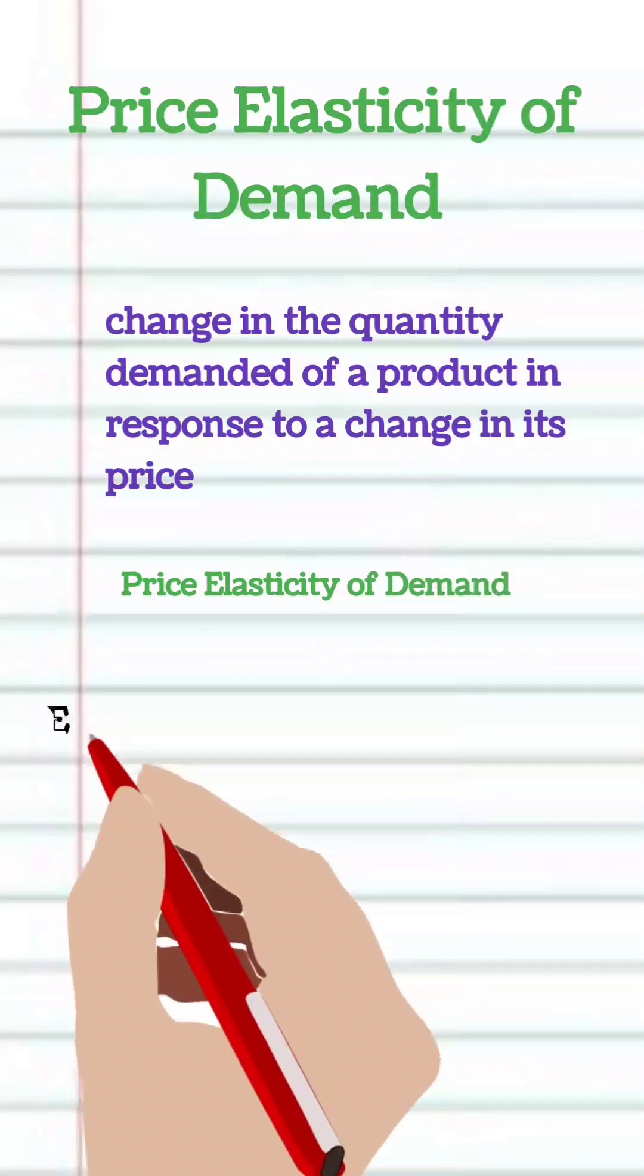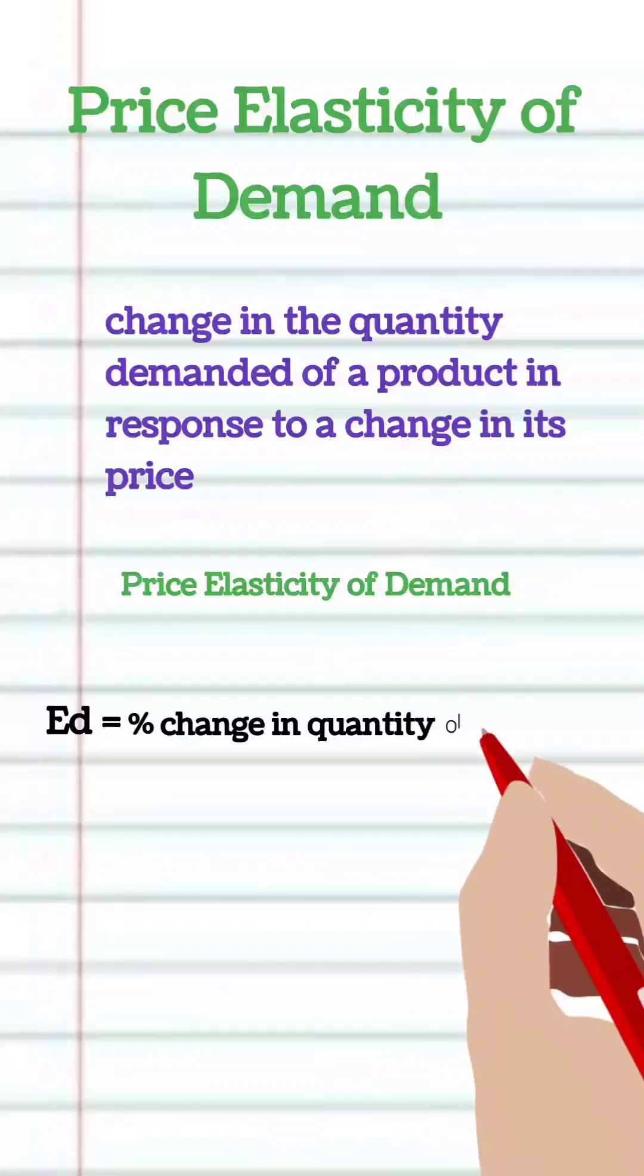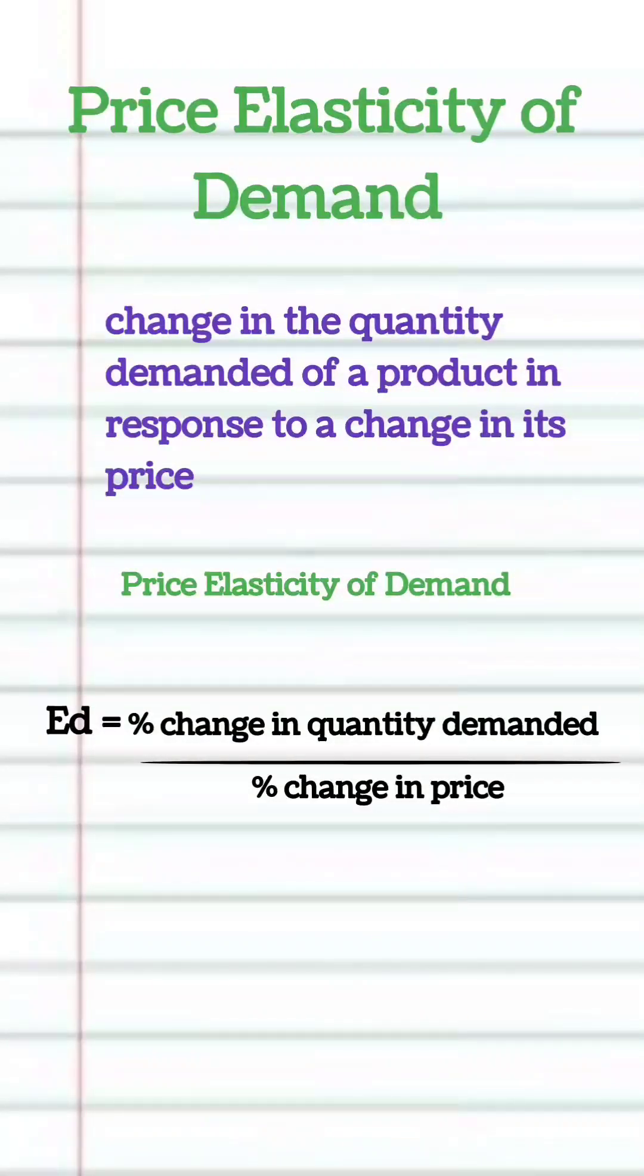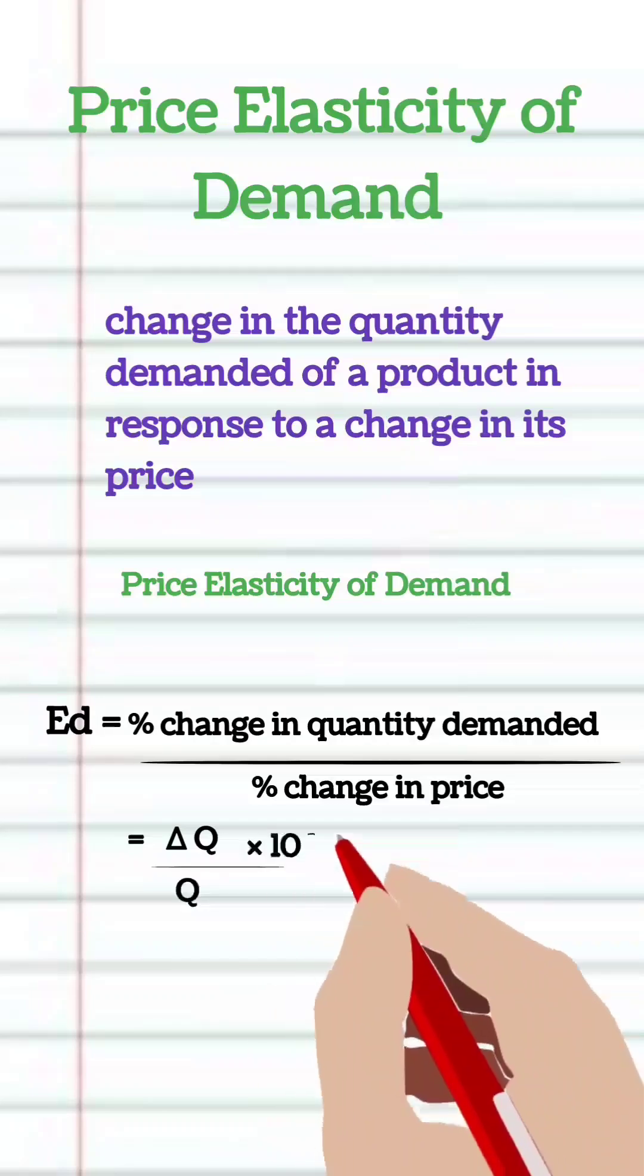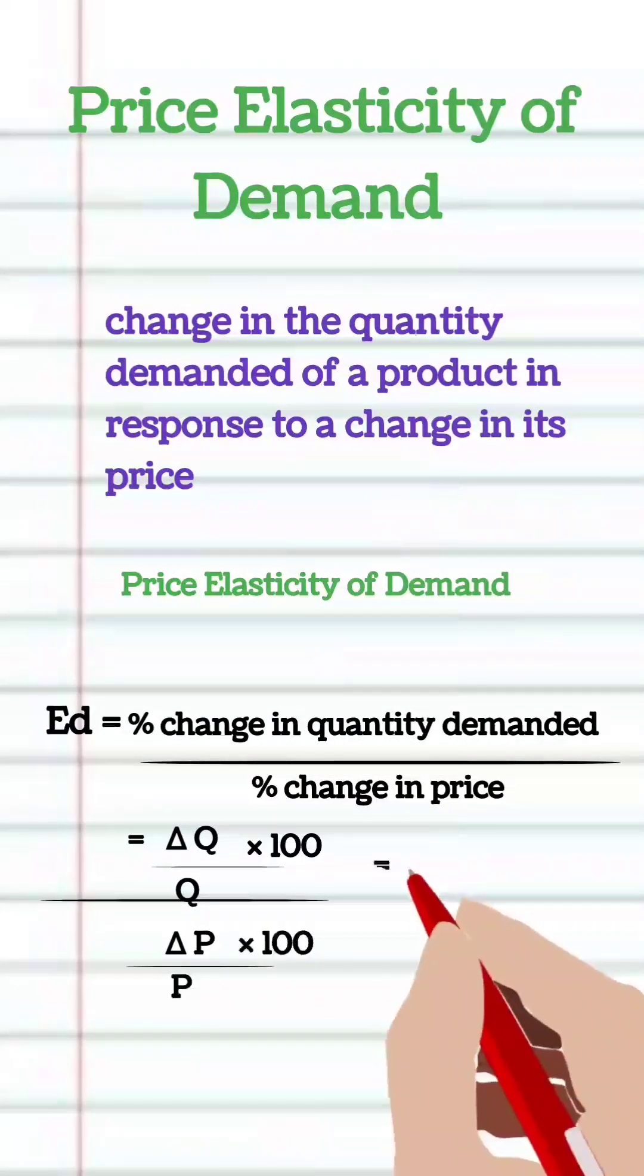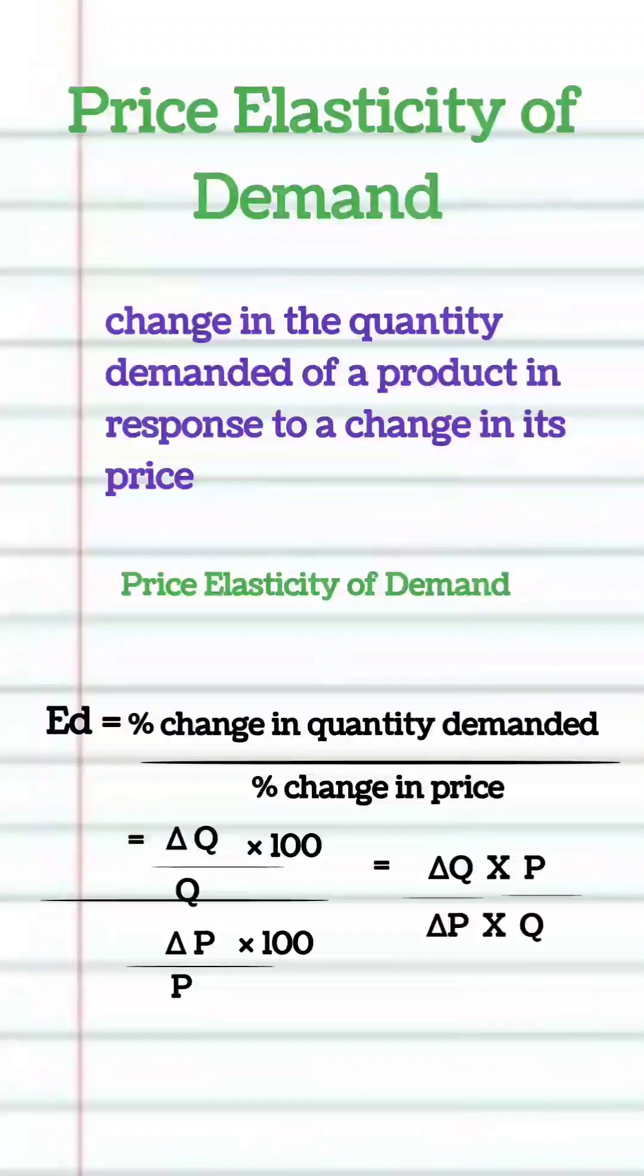Formula for price elasticity of demand is percentage change in quantity demanded divided by percentage change in price. That is delta q upon q into 100 by delta p upon p into 100. On simplifying it will be delta q upon delta p into p upon q.